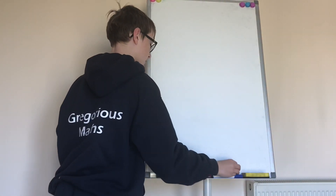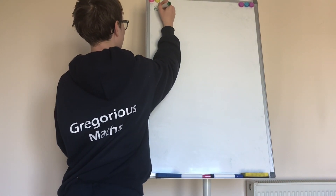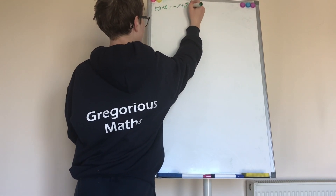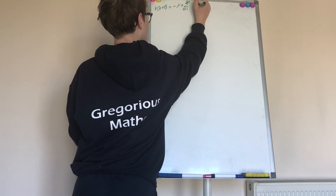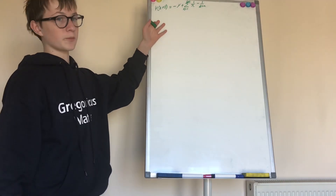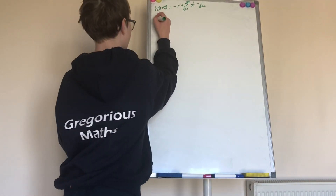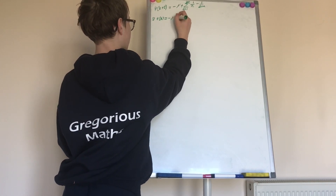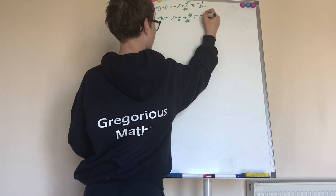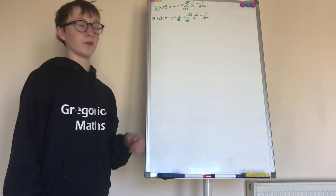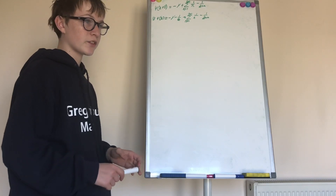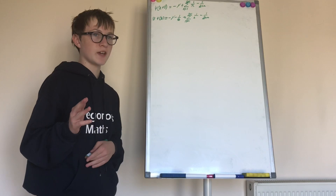Remember in the last video we showed that ψ(z+1) is equal to negative Euler-Mascheroni constant plus the sum from n equals 1 to infinity of 1/n minus 1/(z+n). Because of the reflection formula for the digamma function derived in the last video, ψ(z) equals negative Euler-Mascheroni constant minus 1/z plus the sum from n equals 1 to infinity of 1/n minus 1/(z+n). All of the stuff I derived in the last video you can extend to the polygamma functions by differentiating n times and finding a pattern.